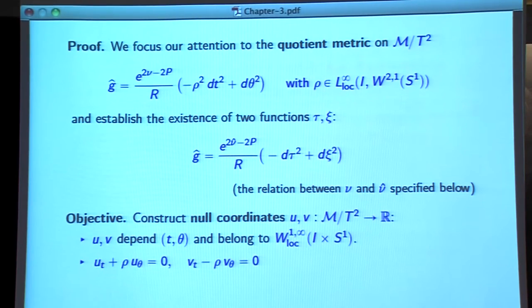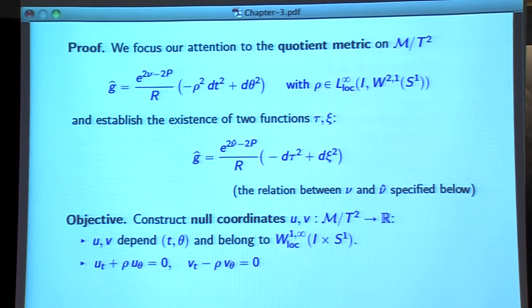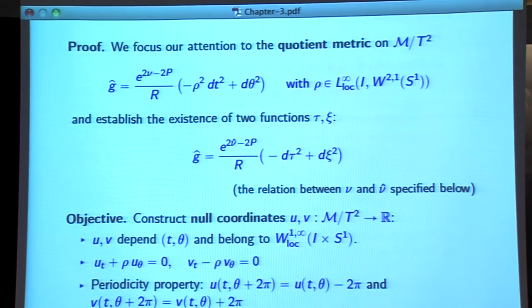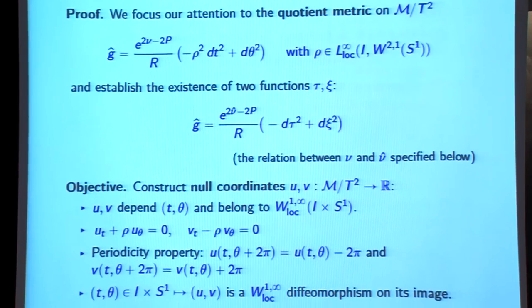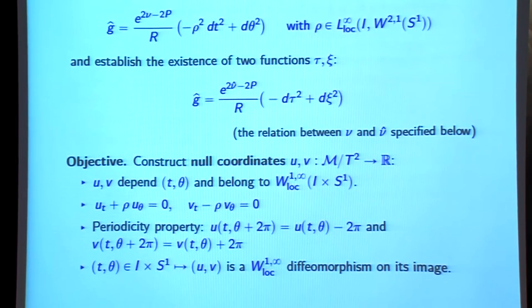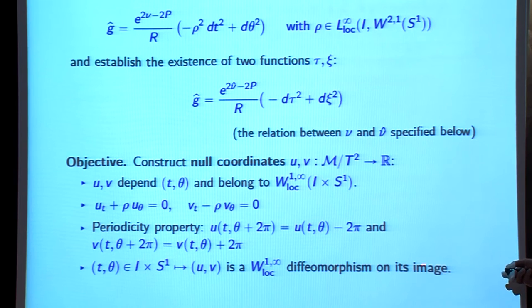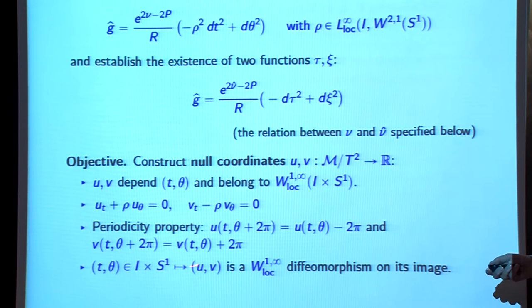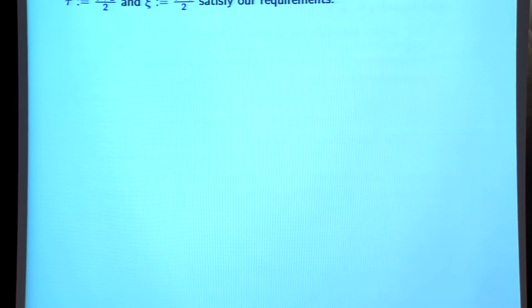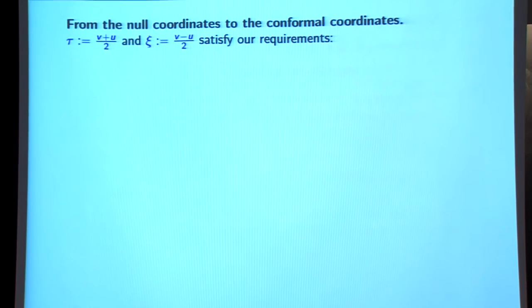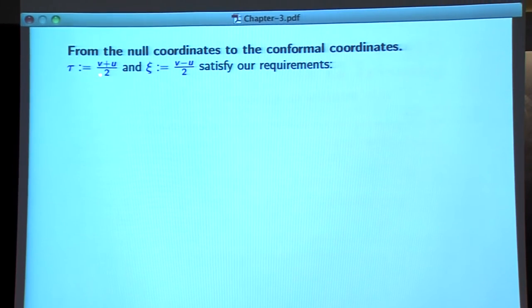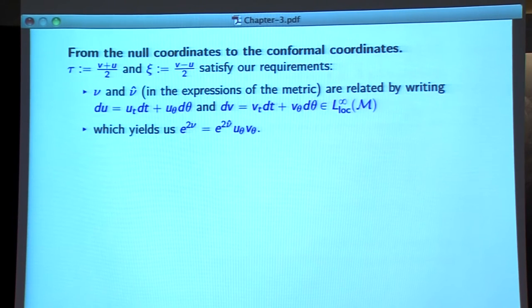You need to solve this system at rather low regularity. You impose periodicity conditions to work on S¹, and look for maps u and v that are diffeomorphisms onto their image, again only Lipschitz continuous. You then set τ = (v + u)/2 and ξ = (v - u)/2 and check easily that you have the requirements. You can also compute easily the relation between ν and ν̂ appearing in the metric expression in both coordinate systems.